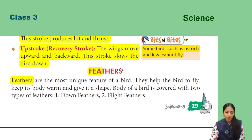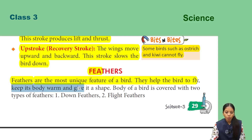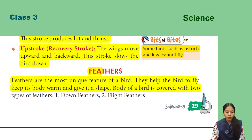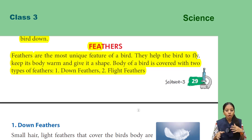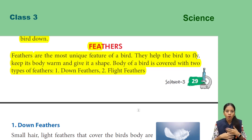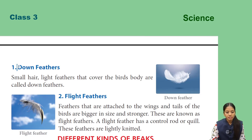Now let's talk about feathers. Feathers are the most unique feature of a bird. They help the bird to fly, keep its body warm, and give it a shape. The body of a bird is covered with two types of feathers: down feathers and flight feathers.